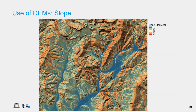In a GIS we can also calculate the slope from DEMs, choosing between slope in degrees or in percentage. Here we have calculated it in degrees and blended the result with the hillshade to better interpret the results, using a color scale from blue to red — the more red it is, the steeper the slope.